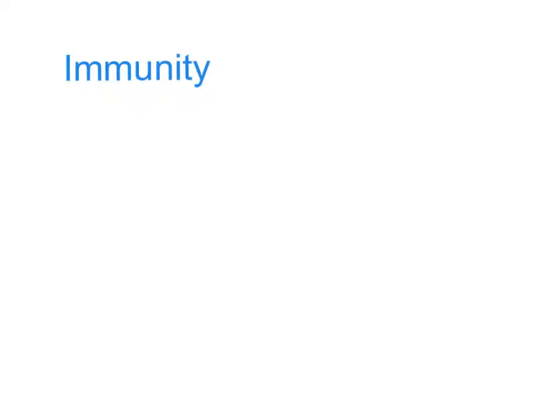Welcome to this presentation on immunity. Basically it's the way that your body becomes immune to certain diseases, and the way that it does it is by being able to produce things called antibodies against bacteria and viruses. We're going to look at how that happens right now.